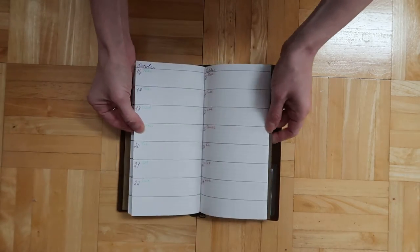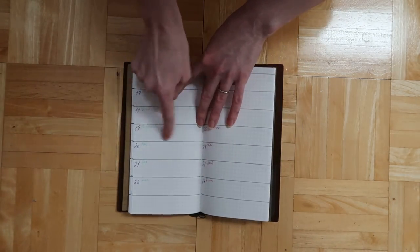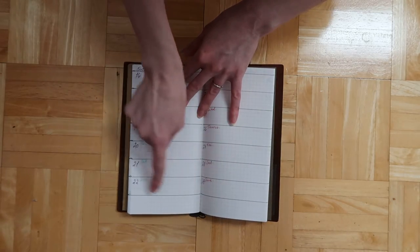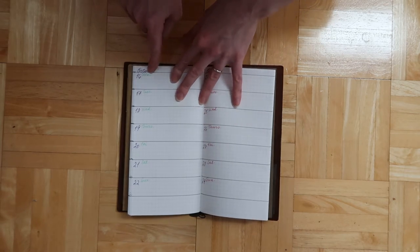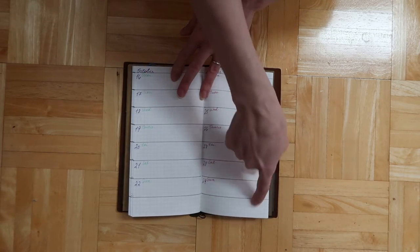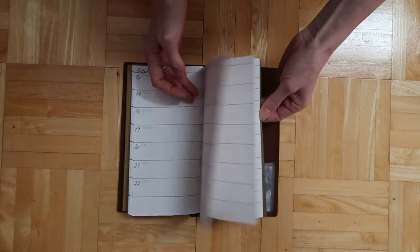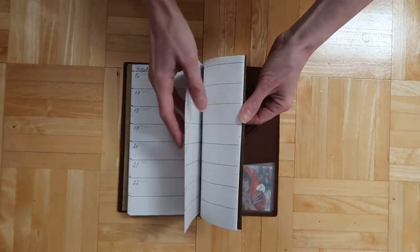Cause once you draw one set of lines on the first page, then you can kind of see through the back of the page. So you just kind of go over it and then you just follow that over on this page. And then you just write in the dates and then the days of the week. And it's really not that bad.